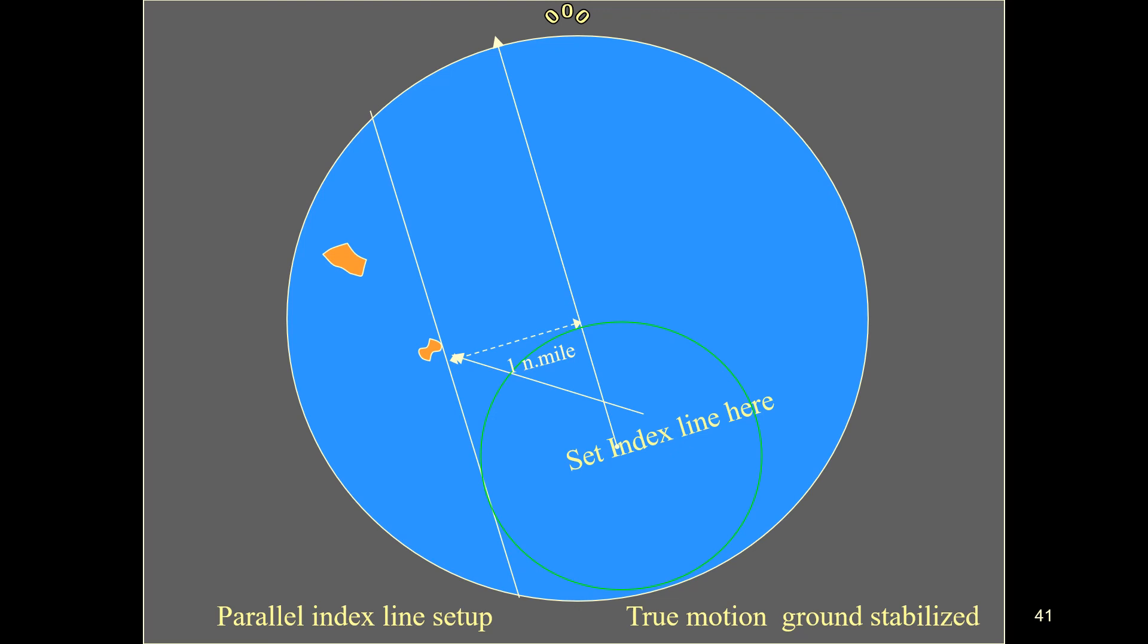If the electronic bearing marker is set parallel to this line, it will indicate the course to be made good by own ship over the ground. Any departure of own ship from this course will be indicated by the drawn line not being tangential to the variable range marker circle.